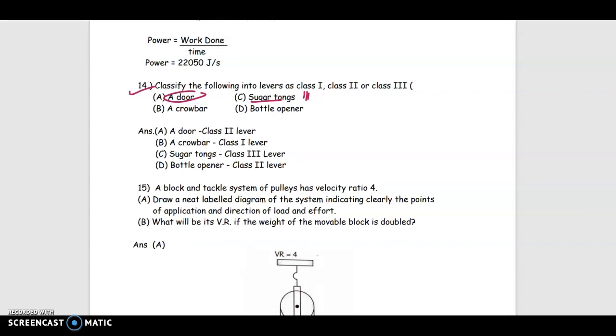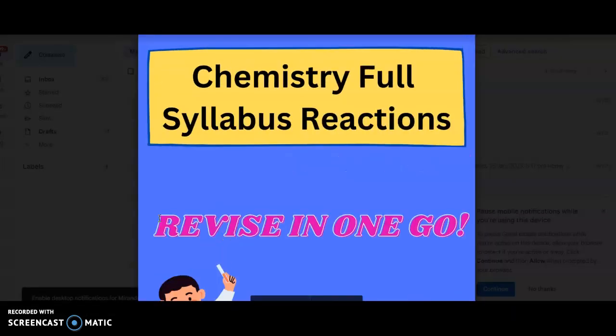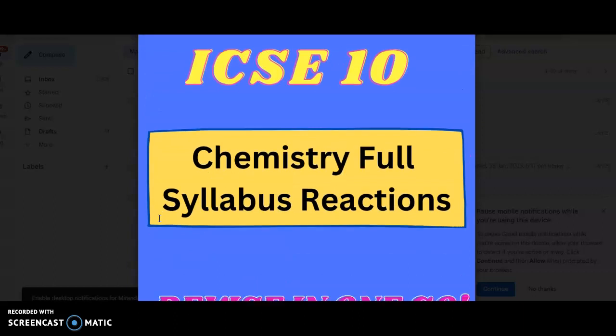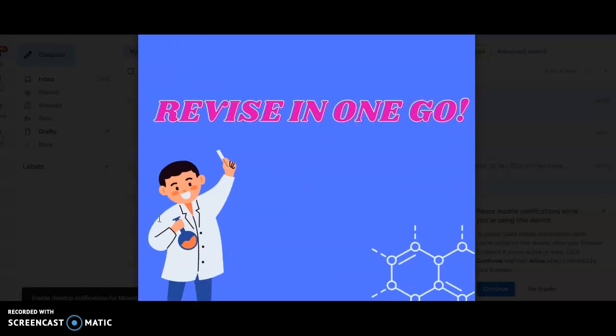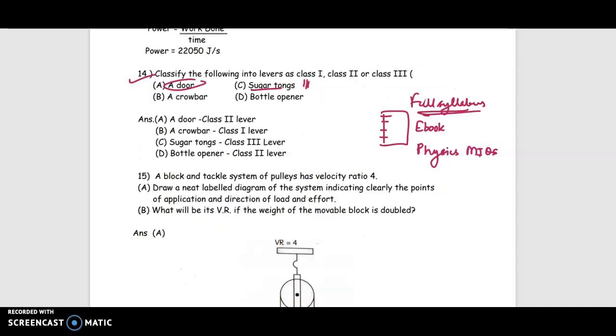So there are many MCQs. If you want to study from these MCQs and these are the most important MCQs, I've made an e-book. Physics MCQs that contains the most important questions. And I'm pretty sure that a lot of questions will be asked from here. It includes all important questions also the previous year. And full syllabus is covered. If you want to buy this e-book, you can go to the description box. The link is provided there. Not only this, we also have a chemistry full syllabus reactions e-book for ICSC 10th. You can revise all the reactions in one go. You can see all the reactions are in this. And they are not expensive. You can buy it.